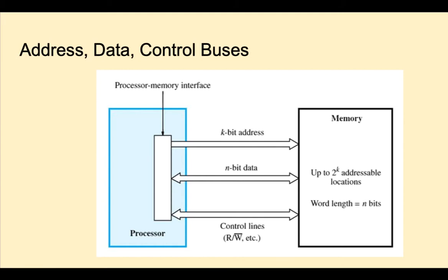Here we see a conceptual diagram of the communication between a processor and memory. Communication happens through three types of buses: address buses, data buses, and control buses.